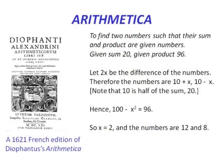Diophantus did not present general methods but often chose a particular example. Here is one adapted from his Arithmetica: find two numbers whose sum is 20 and product is 96. He takes 2x as the difference between the numbers, writing them as 10 plus x and 10 minus x — so their sum is automatically 20. The product condition gives (10+x)(10−x) = 100 − x² = 96, so x equals 2, and the numbers are 12 and 8.